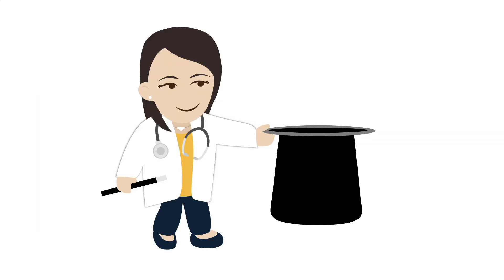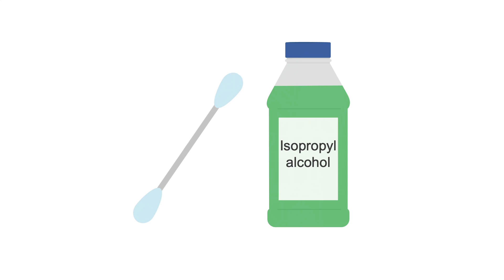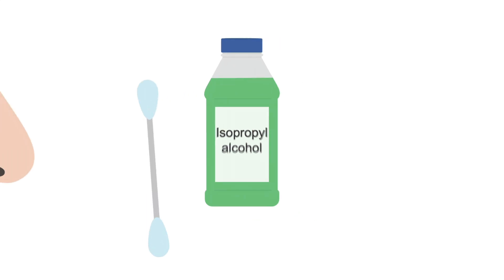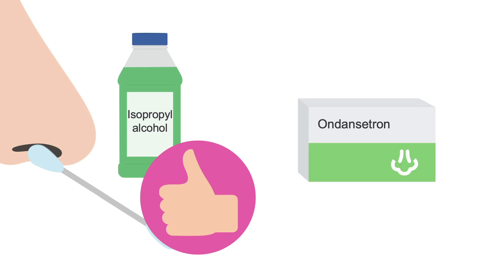Lastly, here is one neat trick that is cost-effective and involves negligible side effects: smelling isopropyl alcohol. You can find this easily in the form of an alcohol swab. There was a study in 2018 that found that sniffing alcohol swabs was superior to oral ondansetron in treating nausea in the hospital. It's low-cost and easy to try, with few drawbacks, so it's a nice simple trick to try first.